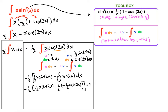If you differentiate negative ½·cos(2x) you get sin(2x). Bringing in our first integral: ½ times the anti-derivative of x is ½·x², so that term becomes ¼·x².